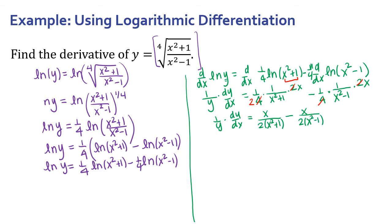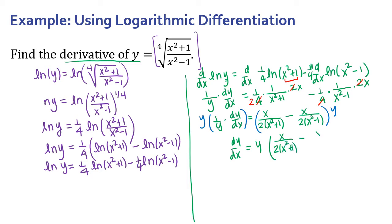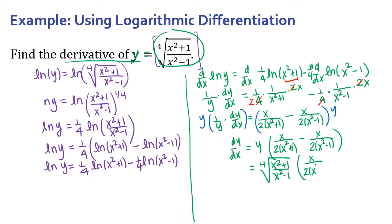My goal is to find dy/dx, so I'll multiply both sides by y to isolate it. That gives dy/dx equals y times [x over 2(x² + 1) minus x over 2(x² − 1)]. Since I know y in terms of x, I substitute it in: dy/dx equals the 4th root of (x² + 1)/(x² − 1), all times [x over 2(x² + 1) minus x over 2(x² − 1)]. It still looks complicated, but it's far fewer steps than using the chain rule and quotient rule together.